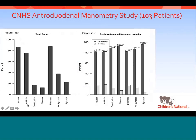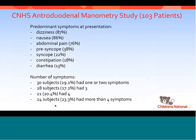Since these were GI patients, their symptoms are obviously weighted to GI-type symptoms. They had nausea in about 83% of patients, followed by abdominal pain, constipation, diarrhea, dizziness, presyncope, and syncope. Dizziness and nausea were almost equal at 87 and 86%. The interesting thing is that 30% of patients had one or two symptoms, but 27% had three symptoms, 20% had four symptoms, and 23% had more than four symptoms — so they tend to have a laundry list of symptoms.